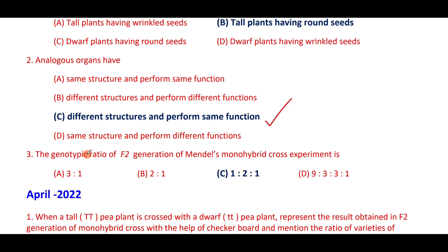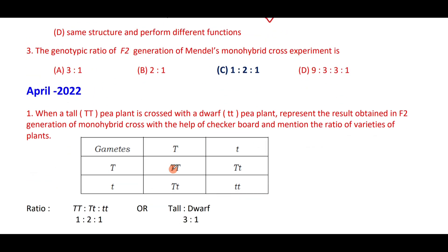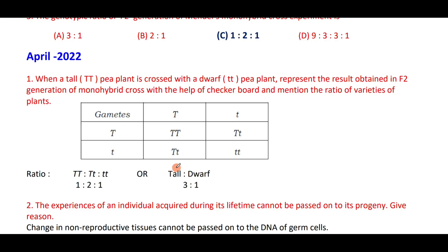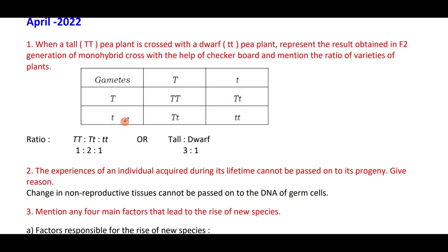The genotypic ratio of the F2 generation of Mendel's monohybrid cross experiment is 1:2:1, and the phenotypic ratio is 3:1. When a tall pea plant is crossed with a dwarf pea plant, represent the result in the F2 generation. With the help of a checkerboard, mention the ratios of varieties of plants. This is a very simple experiment — monohybrid cross experiment for three or four marks. Do practice well.